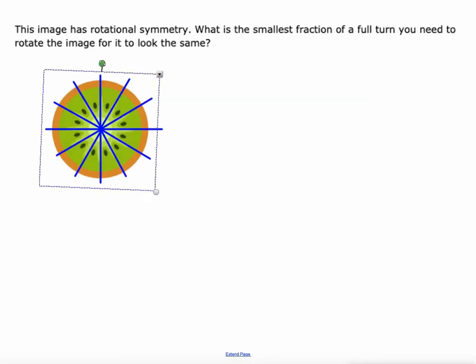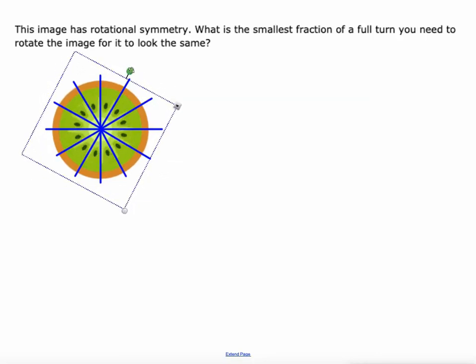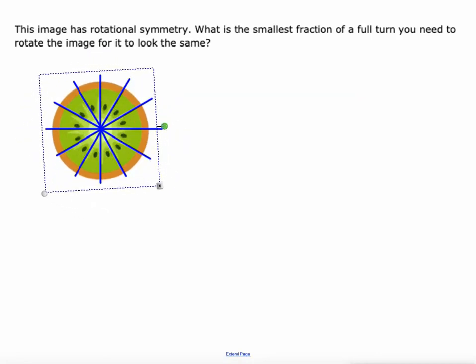So if I rotate it just one-twelfth of the way, it still looks the same. Another twelfth, looks the same. Another twelfth, looks the same. So what's the smallest fraction is just one-twelfth of a rotation.